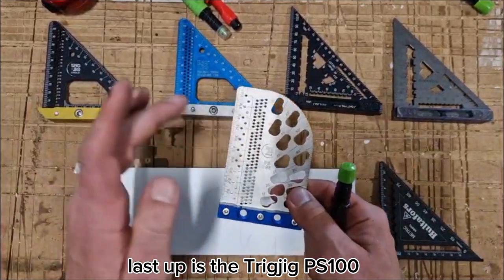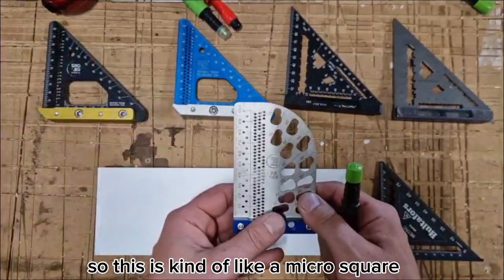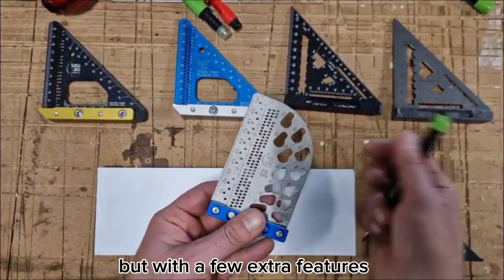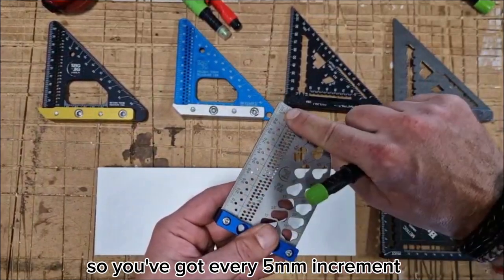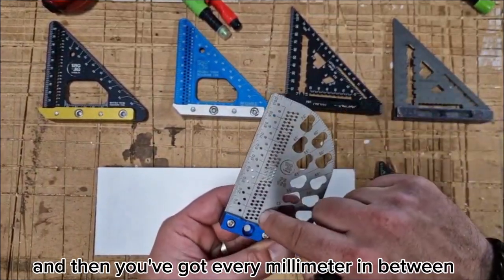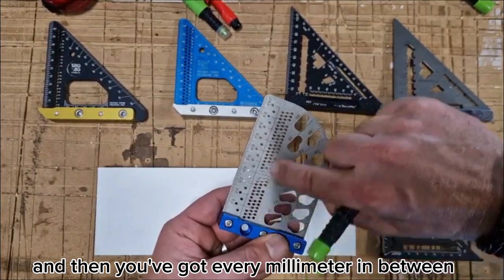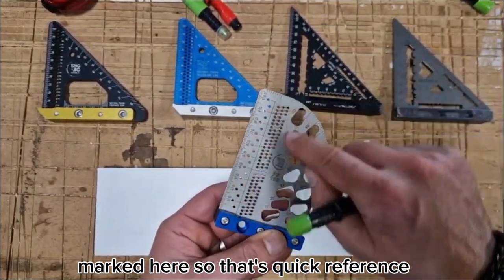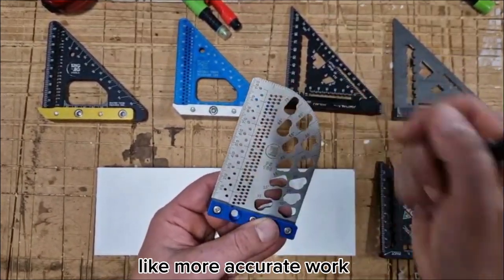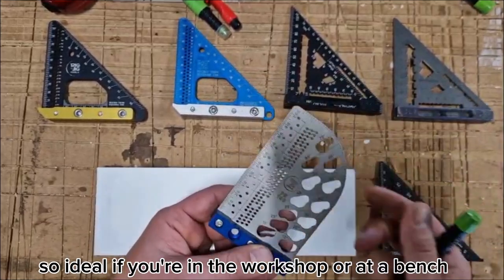Last up is the Treejig PS100. This is kind of like a micro square but with a few extra features. You've got every 5mm increment scribe marks down the side here and then you've got every millimeter in between marked here. That's quick reference and for doing more accurate work, so ideal if you're in the workshop or at a bench.